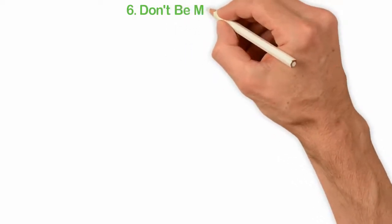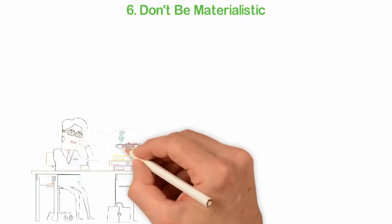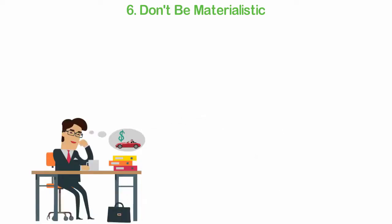6. Don't be materialistic. Most people want to be rich because they want to drive Ferraris and Lamborghinis. If driving the most expensive cars is the reason why you want to be rich in the first place, you're pursuing money for the wrong reason.